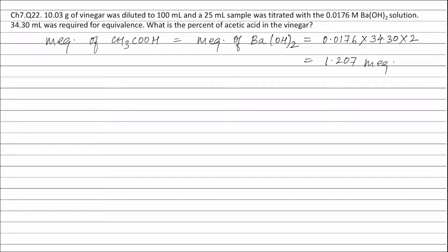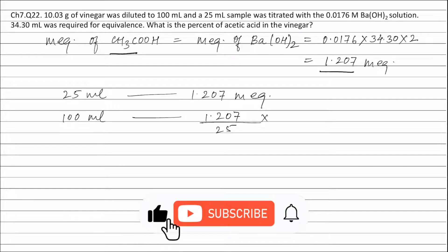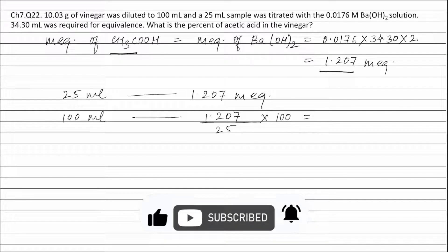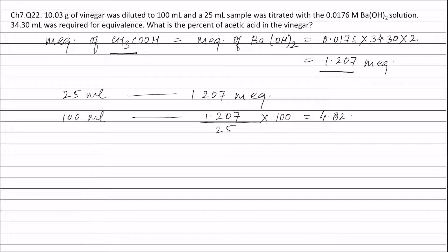Therefore milliequivalents of acetic acid is equal to 1.207 milliequivalents. Now 25 ml of acetic acid contains 1.207 milliequivalents. Therefore 100 ml of acetic acid will contain 1.207 divided by 25 into 100, and this is equal to 4.828 milliequivalents of acetic acid.